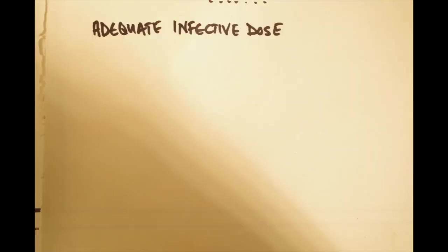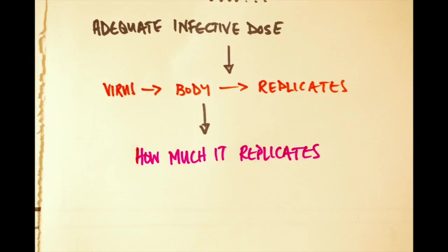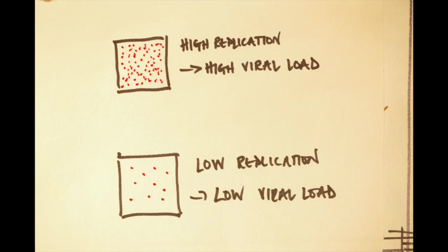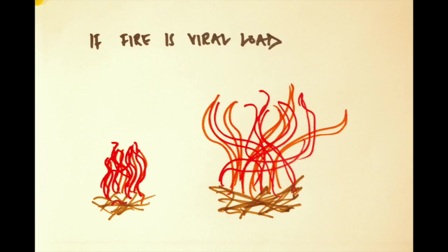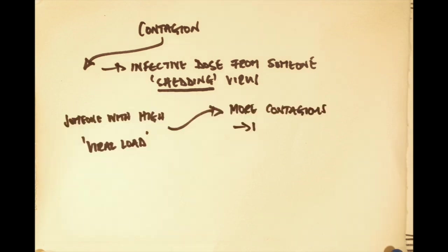Once you've been infected by a big enough infective dose of virus, the virus replicates in the cells of your body. The extent to which it does this determines the viral load. If the fire is your viral load, how bright it is represents the concentration. Contagion happens when you get an adequate infective dose from someone who is shedding virus.